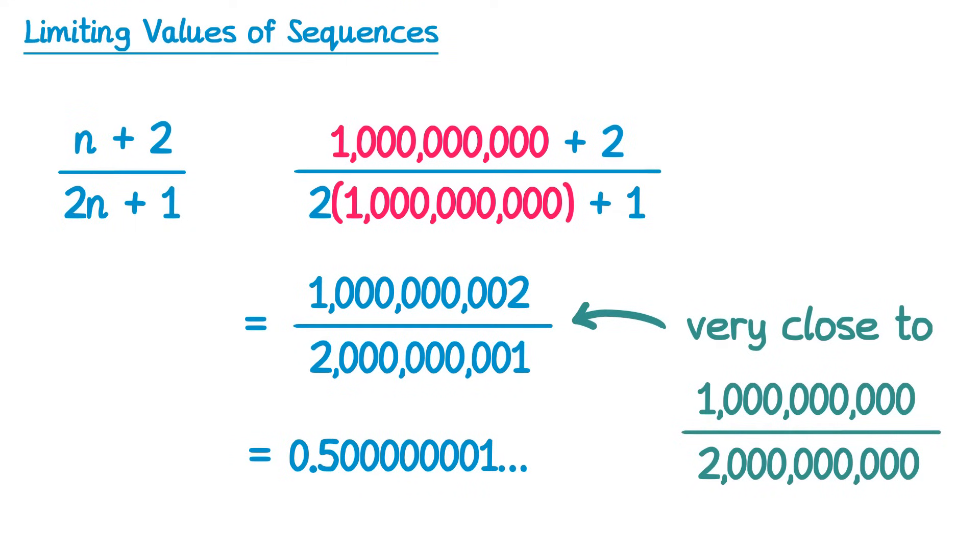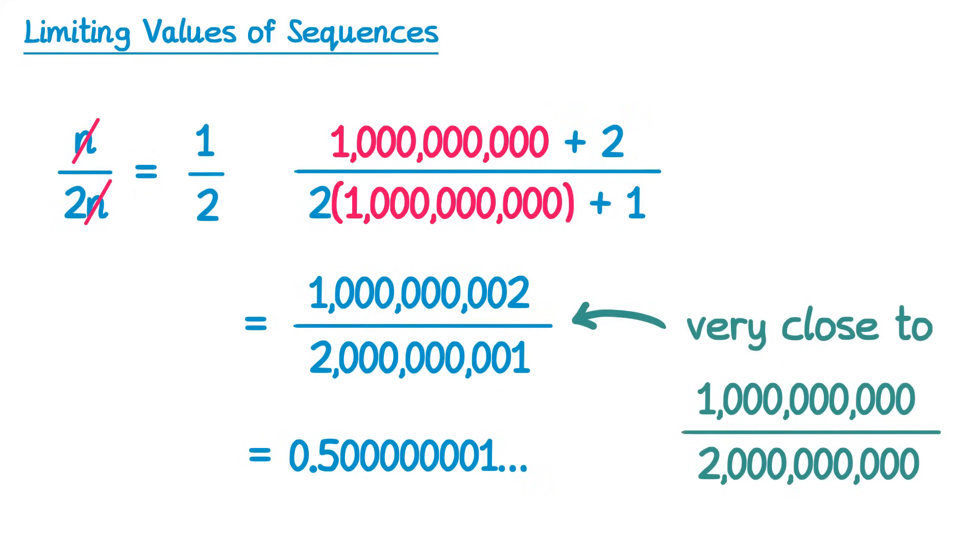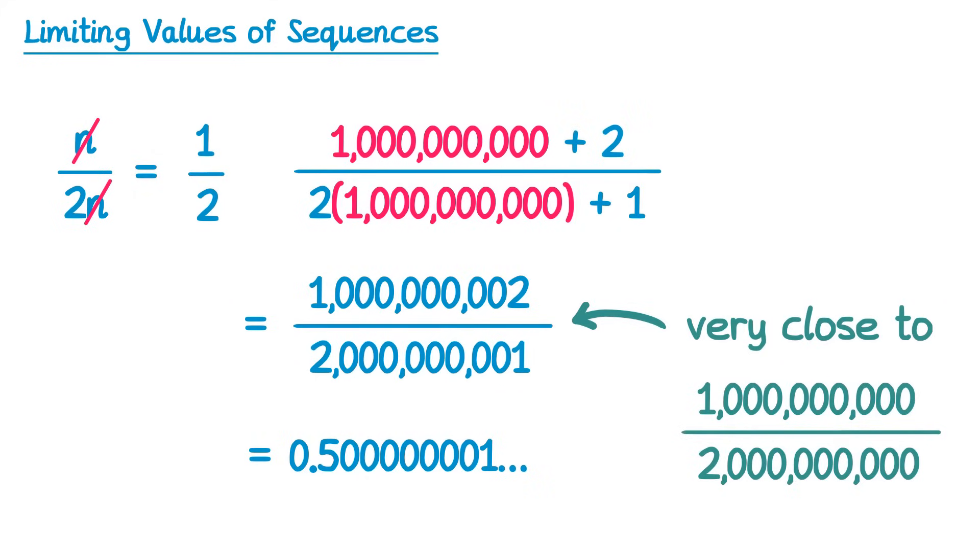What's happening here is as we make n very very large, this plus 2 and this plus 1 become less and less significant. In fact, if we make n tend towards infinity, the plus 2 and plus 1 become completely insignificant, in which case we are left with n over 2n. Of course n over 2n simplifies down to give you one half.